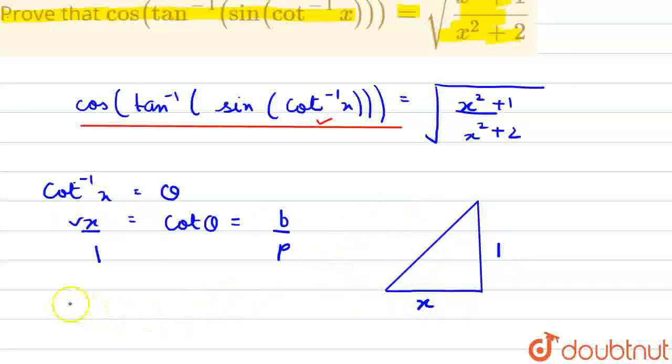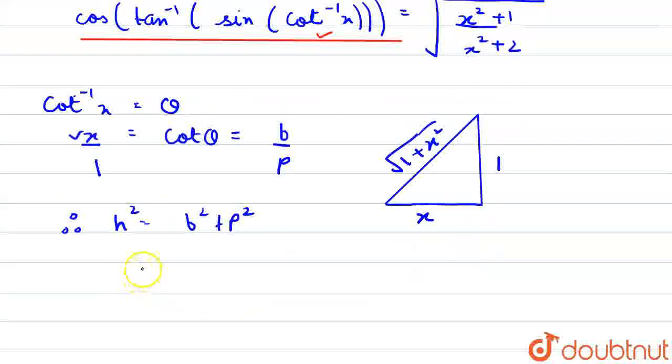Now, using the formula h squared is equal to b squared plus p squared, we will get root of 1 plus x squared. Now, in order to get theta in terms of sin, we will do sin theta is equal to perpendicular upon hypotenuse.